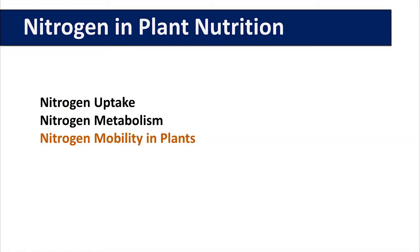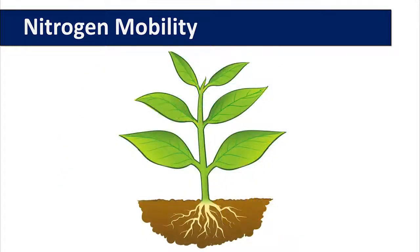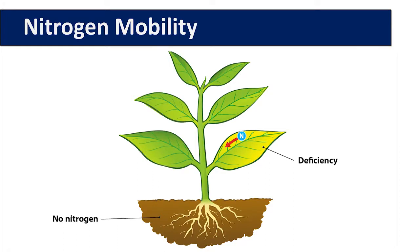Nitrogen mobility in plants: once nitrogen is taken up into the plant, it is translocated in the xylem to where it is needed. However, if there is insufficient nitrogen available in the soil, or if there is damage or pathogens present in the root system causing limited nitrogen uptake, plants can re-mobilize nitrogen by breaking down proteins in older leaves and move that nitrogen up into the younger leaves or actively growing parts of the plant where nitrogen is needed.